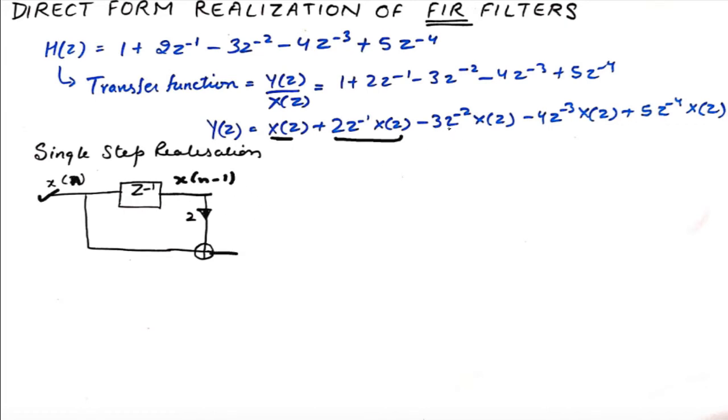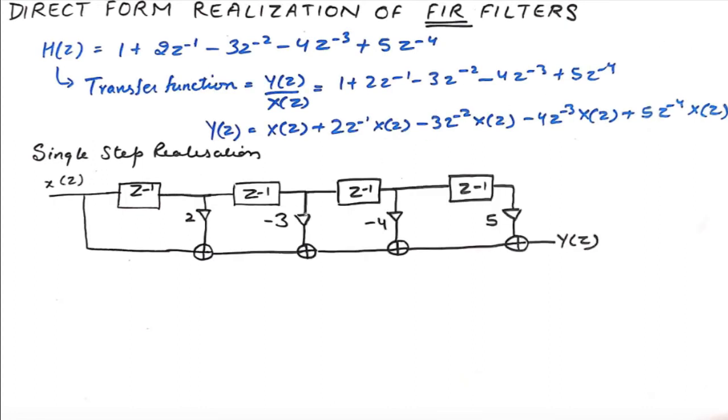Then you again take a delay block and the subsequent delay blocks give me terms X of Z. This gives me 2Z inverse X of Z. They are being added here. So with each delay block and with each constant multiplier I am adding all these terms to get Y of Z.